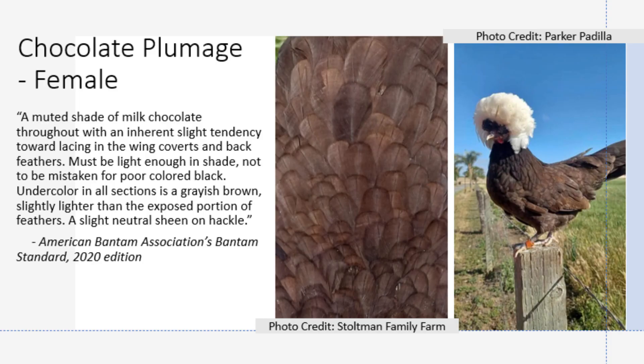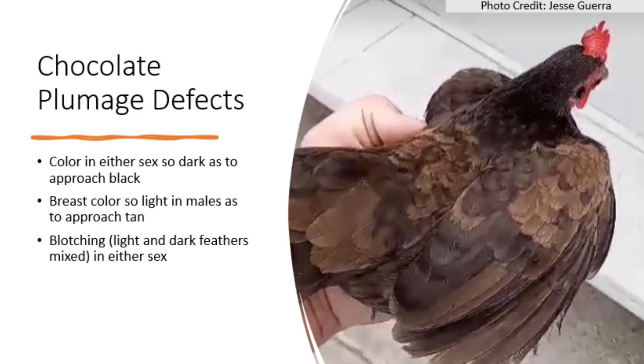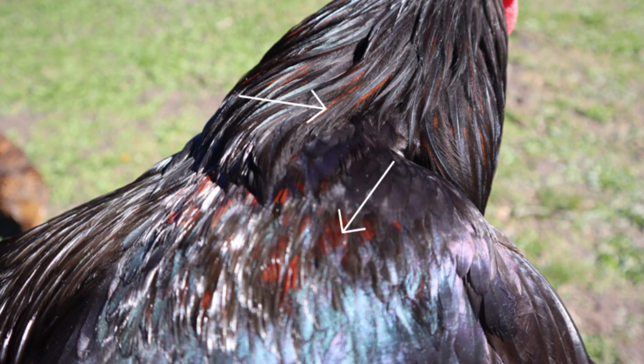For females, it calls for a simpler pattern of a muted shade of milk chocolate throughout with a slight tendency towards lacing in the wing coverts and back feathers. It also warns that the color should be light enough to distinguish it from a poorly colored or sun-bleached black that appears brown. Like the males, it calls for a grayish brown undercolor and a slight neutral sheen on the hackle feathers. The listed defects for the chocolate variety include the color so dark in either sex that it approaches black, slight breast color in males that approaches tan, blotching of light and dark feathers in either sex, and silver or gold leakage.